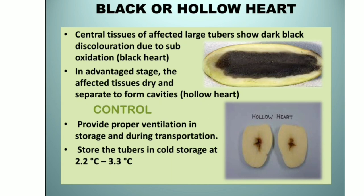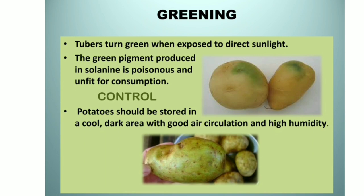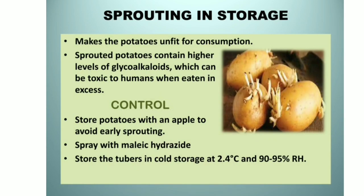To control black heart, provide proper ventilation in storage and during transportation, and store the tubers in cold storage at 2.2°C to 3.3°C. Greening: tubers turn green when exposed to direct sunlight. The green pigment solanine produced is poisonous and unfit for consumption. To control this, potatoes should be stored in a cool, dark area with good air circulation and high humidity.